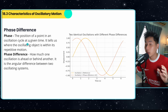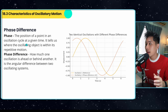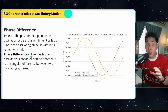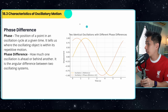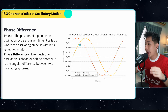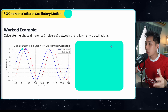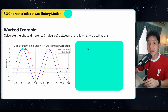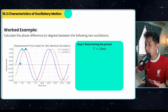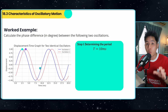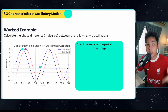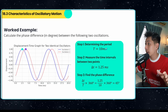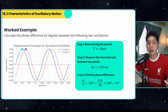Another concept from waves is phase and phase difference. Phase is the position of a point in an oscillation cycle at a given time, whereas phase difference is how much one oscillation is ahead or behind another. For questions like 'calculate the phase difference between two oscillations,' you first identify the period — the time taken for one complete oscillation — then identify the time difference between the two points, which is 1.25, and use: (difference / period) × 360 to find the phase difference.